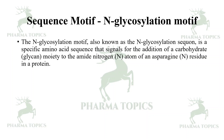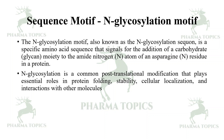Next is the N-glycosylation motif, which is also a sequence motif. The N-glycosylation motif, also known as the N-glycosylation sequence, is a specific amino acid sequence that signals for the addition of a carbohydrate (glycan moiety) to the amide nitrogen atom of an asparagine residue in a protein. N-glycosylation is a common post-translational modification that plays essential roles in protein folding, stability, cellular localization, and interactions with other molecules.